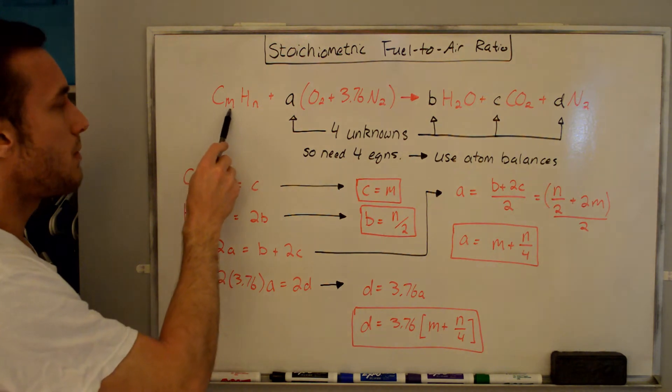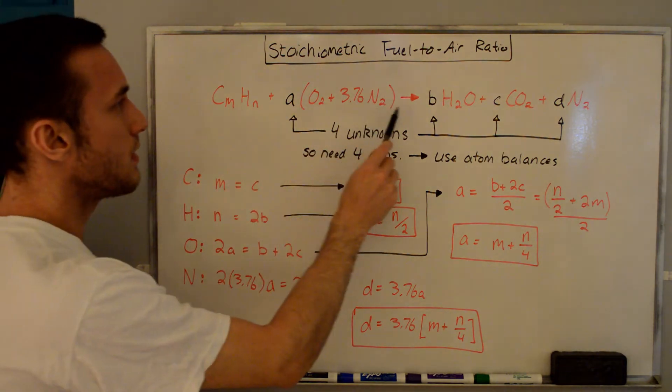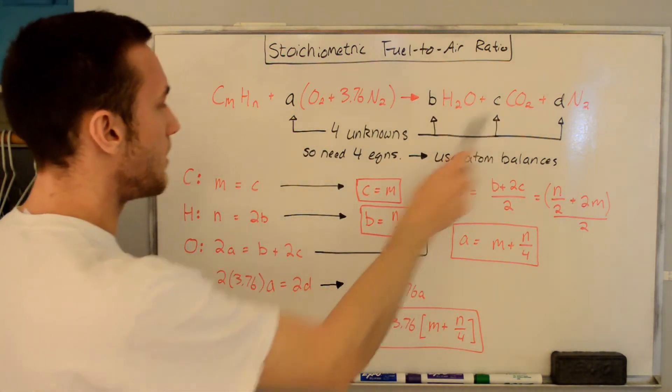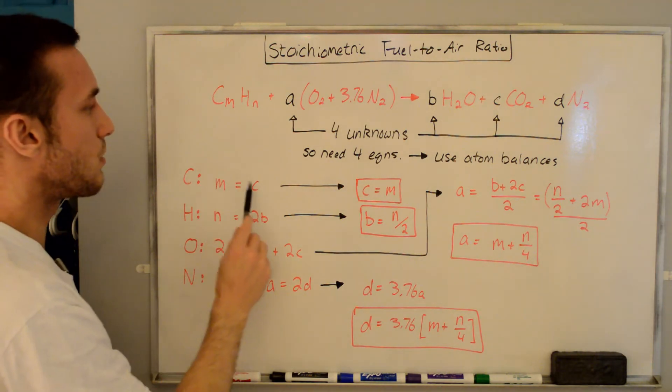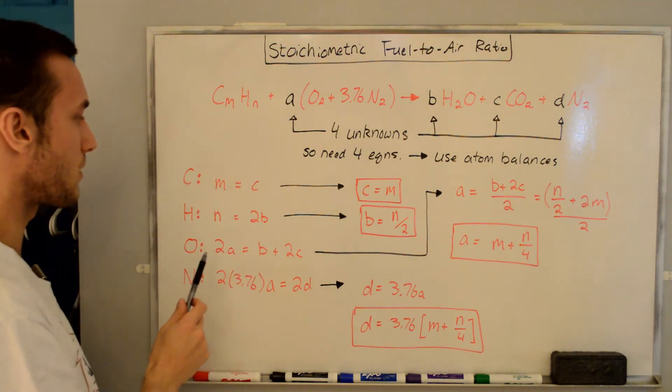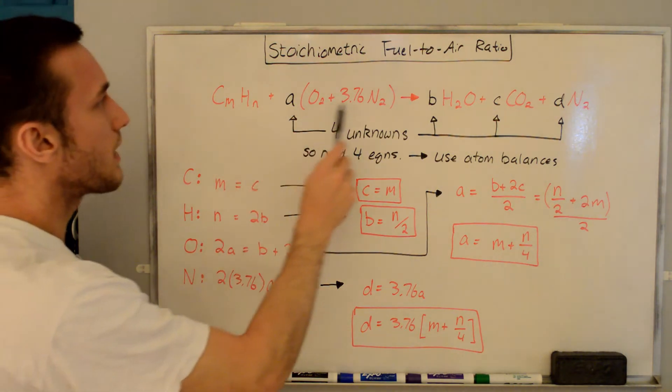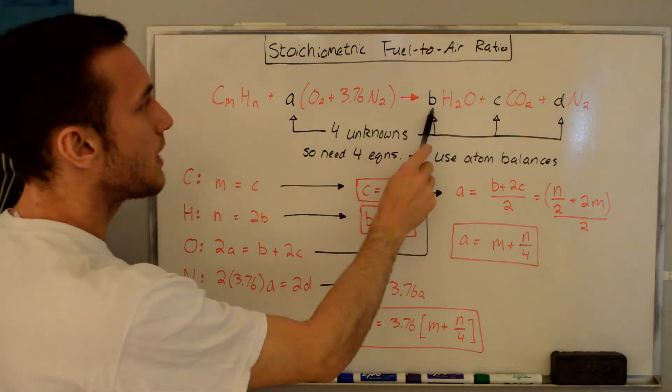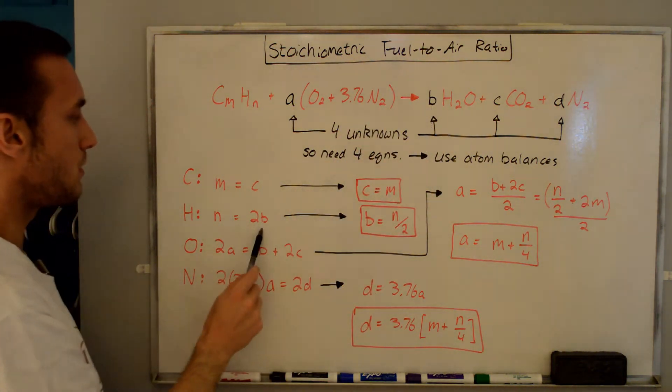For carbon, see that we have M here, nothing else over here, and then we have C. So we have M on the left-hand side is equal to C on the right-hand side, so that's our first equation. Now we go to hydrogen, here we have N, nothing else on this side, and we have 2 times B here. So N is equal to 2B.